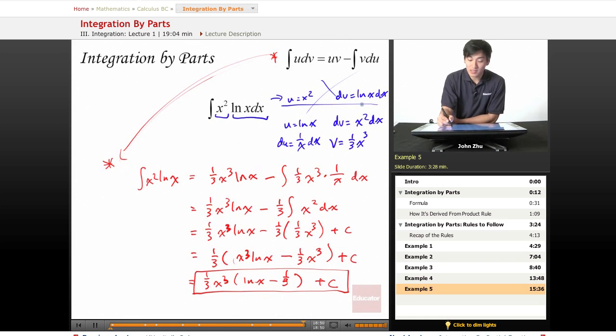we recognize that the integral of x squared is very simple to solve for. So we use that for dv and we notice that ln of x is easy to take the derivative of, so we use that for u. So always be on your toes and use these rules to the best of your advantage. So thanks for watching educator.com integration by parts. We will see you in the next lesson.